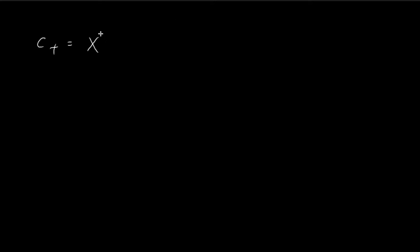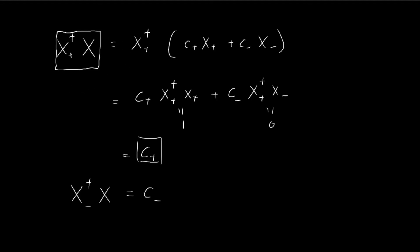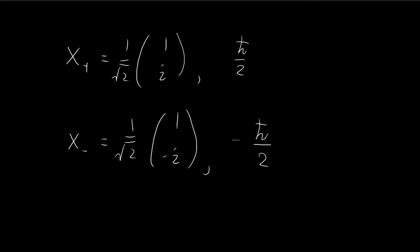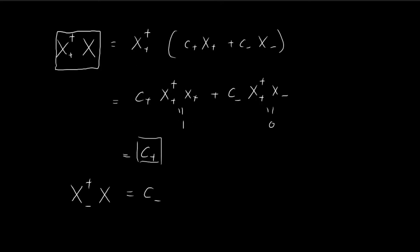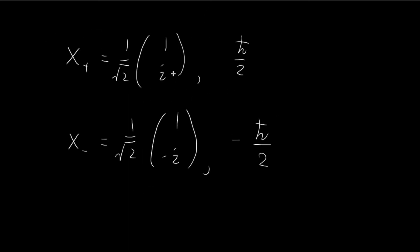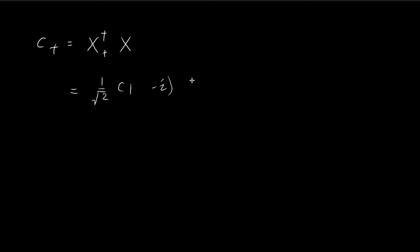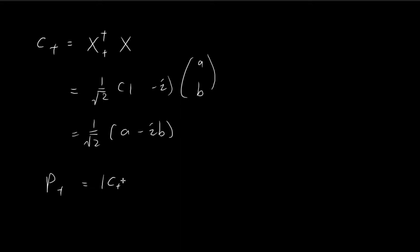Computing C+: take the Hermitian conjugate of the spin-up state (1/√2)(1, i), which becomes the row vector (1/√2)(1, −i), and apply it to (A, B). This gives C+ = (1/√2)(A − iB). Therefore the probability of getting spin-up is |C+|² = (1/2)|A − iB|².